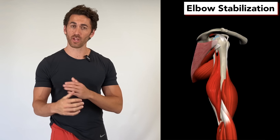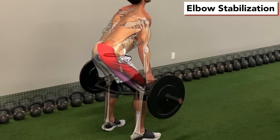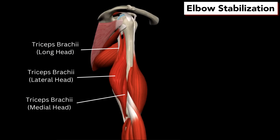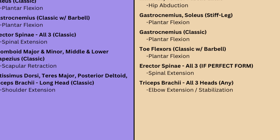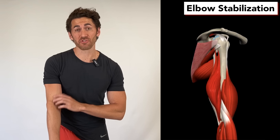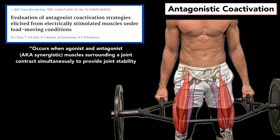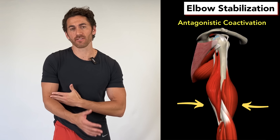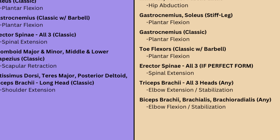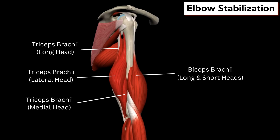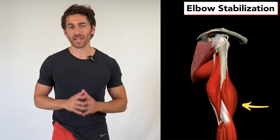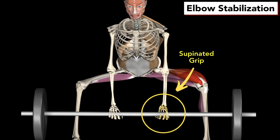Even though the long head of the triceps is the only one that extends the arm, all three tricep heads are required to keep the elbow straight during the deadlift motion and stabilize that joint. And when your body really wants to stabilize a joint, it will apply antagonistic coactivation, so the elbow flexors are also going to be activated in order to stabilize the elbow joint. That includes both heads of the biceps, the brachialis, and brachioradialis. The elbow flexors are activated even more if you are holding the weight in a supinated grip with your palms facing forward.